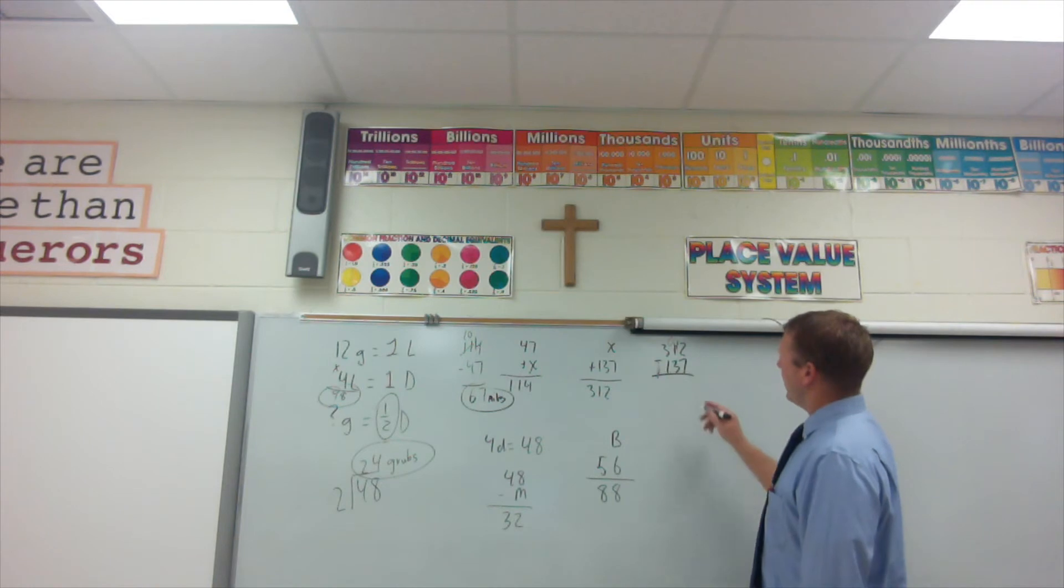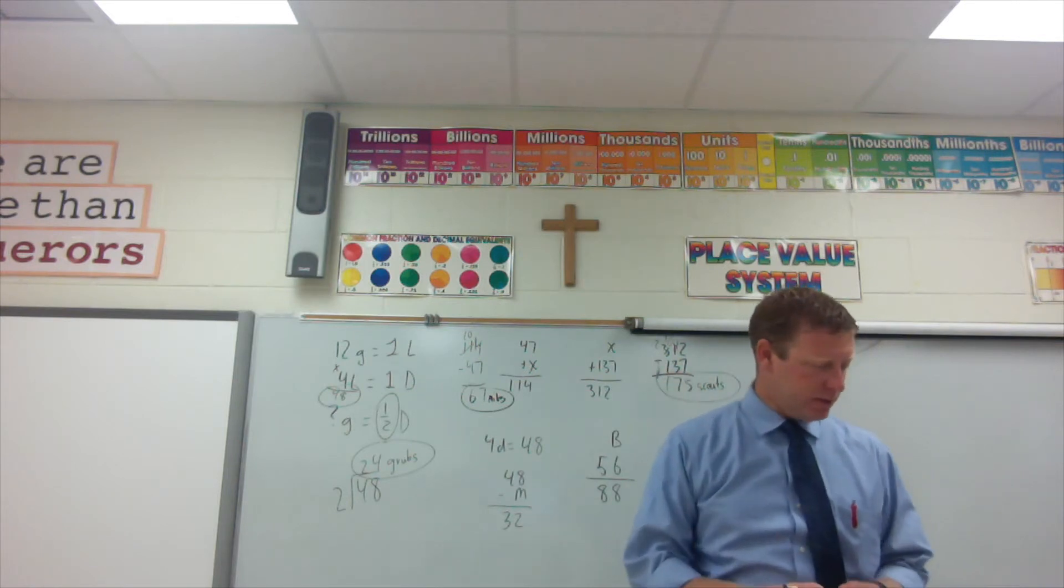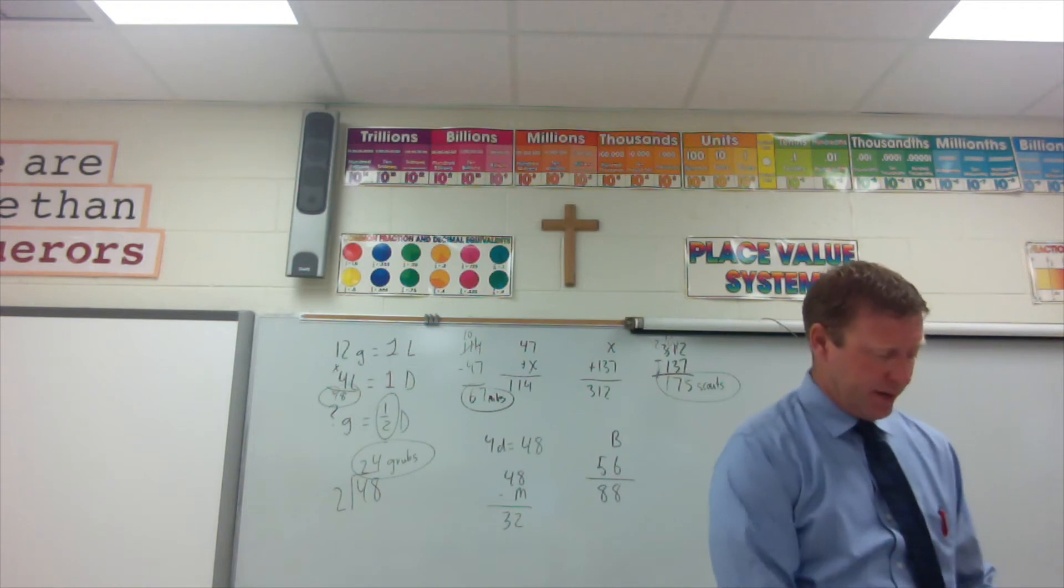Subtraction. 12 minus 7 is 5. Cross, borrow. 10 minus 3 is 7. 2 minus 1 is 1. Label because it's a word problem. 175 scouts were in the first group.